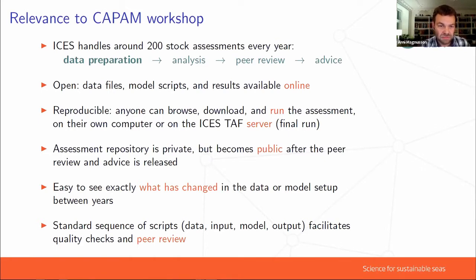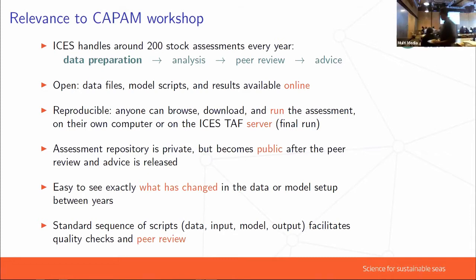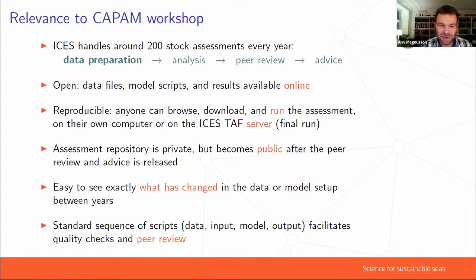It's reproducible — anyone, including you, can browse, download, and run the assessment on your own computer or on the ICES TAF server. The assessments are private while people are working on them, but the repository on GitHub and on the TAF server becomes public after the peer review and advice is released. It's also very useful to see exactly what has changed in the data and model setup between years. Having a standard sequence of scripts for all diverse assessments really facilitates quality checks and peer review.